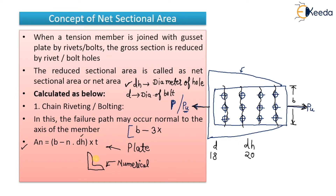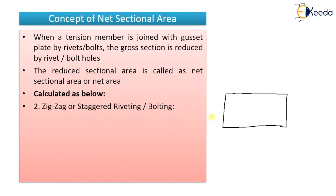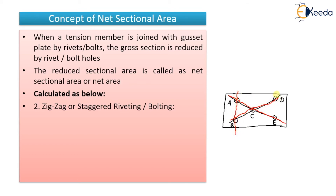Coming back to zigzag or staggered riveting: one rivet is here, another is here, another here, and another here — so the path will be zigzag. Let us say the points are A, B, C, D, and E. In this type of case, the failure may go like this — either in one direction or another, or the vertical path also cannot be ignored. So there are various possible failure paths: A to B, C alone, D to E, and diagonal paths like A-C-E.